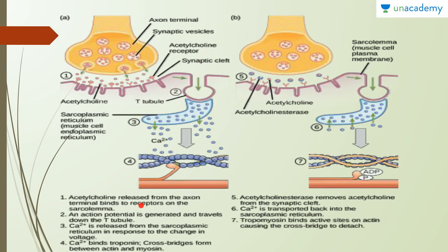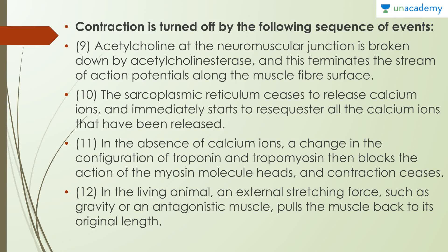To summarize the diagram: acetylcholine is released from the axon terminal and binds to receptors on the sarcolemma. An action potential is generated and travels down the T-tubule. Calcium ions are then released from the sarcoplasmic reticulum in response to the voltage change. Ca²⁺ binds to troponin, cross-bridges form between actin and myosin, and contraction is brought about. Contraction is turned off when acetylcholine at the neuromuscular junction is broken down by the enzyme acetylcholinesterase, which terminates the stream of action potentials along the muscle fiber surface.